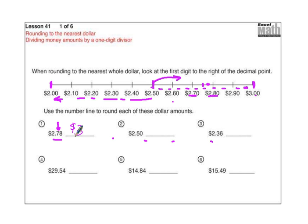Two dollars and fifty cents — as I said before, if it's right in the middle, we're looking at that five to the right of the decimal point. If we don't use a number line and we're saying five rounds up, just like in all rounding, we are going to round that two up to a three. So again, this rounds to three dollars.